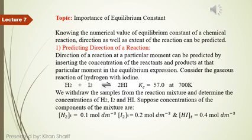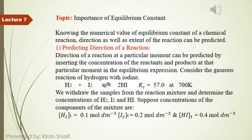First one is predicting the direction of reaction. Direction is very important and you should understand it carefully. The direction of reaction at a particular moment can be predicted by inserting the concentrations of reactants and products at that particular moment into the equilibrium expression. Consider the gaseous reaction: hydrogen plus iodine in a reversible reaction gives hydrogen iodide. The KC value is 57 at 700 Kelvin.